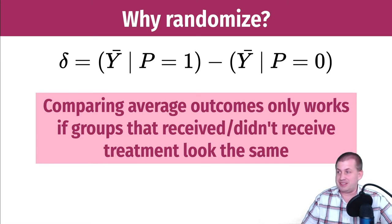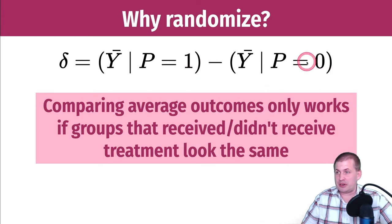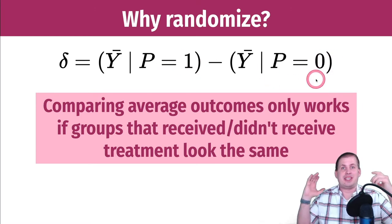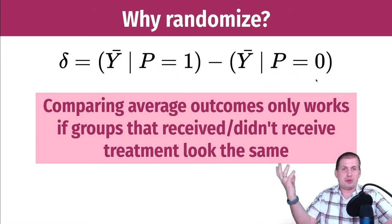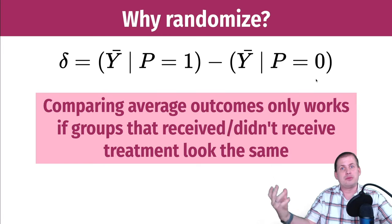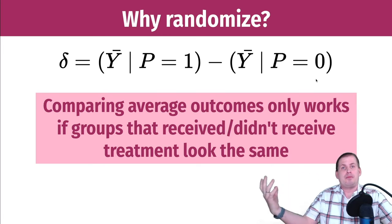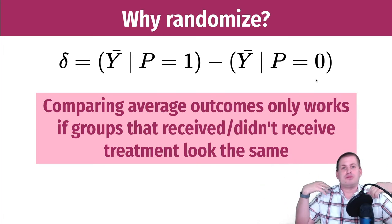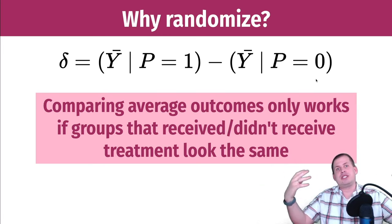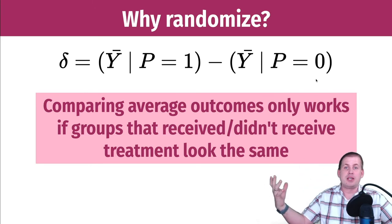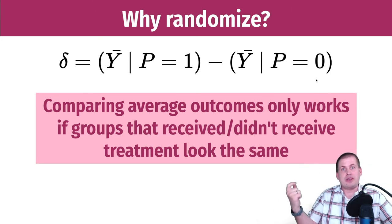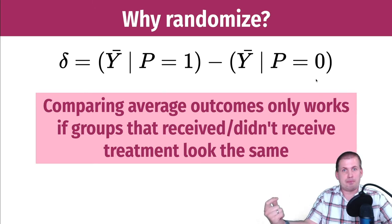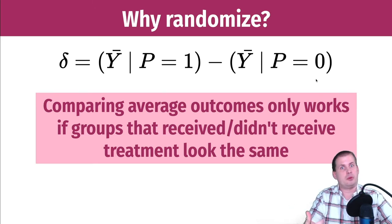As long as program equals one and program equals zero look about the same — the people who are in those two groups on a whole bunch of different characteristics: same age, same income, same gender, same whatever — then your causal effect will be more reputable.